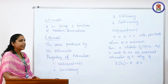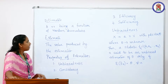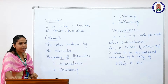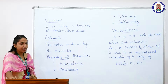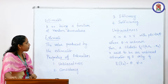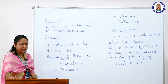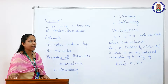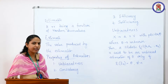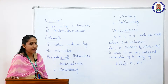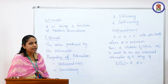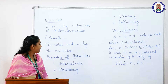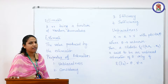What is an estimator? An estimator is a random variable — it is a function of the random observations, and the estimator is a random variable itself. An estimate is the value produced by the estimator.